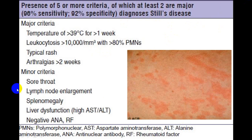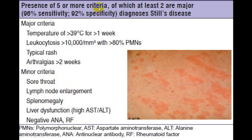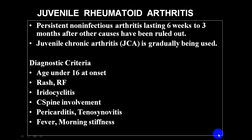Still's disease major criteria include temperature elevation more than one week, leukocytosis, typical rash, and arthralgia for more than two weeks. Minor criteria include sore throat, lymph node enlargement, splenomegaly, liver dysfunction, and negative ANA and RA factor. Presence of five or more criteria makes Still's disease the most likely diagnosis.